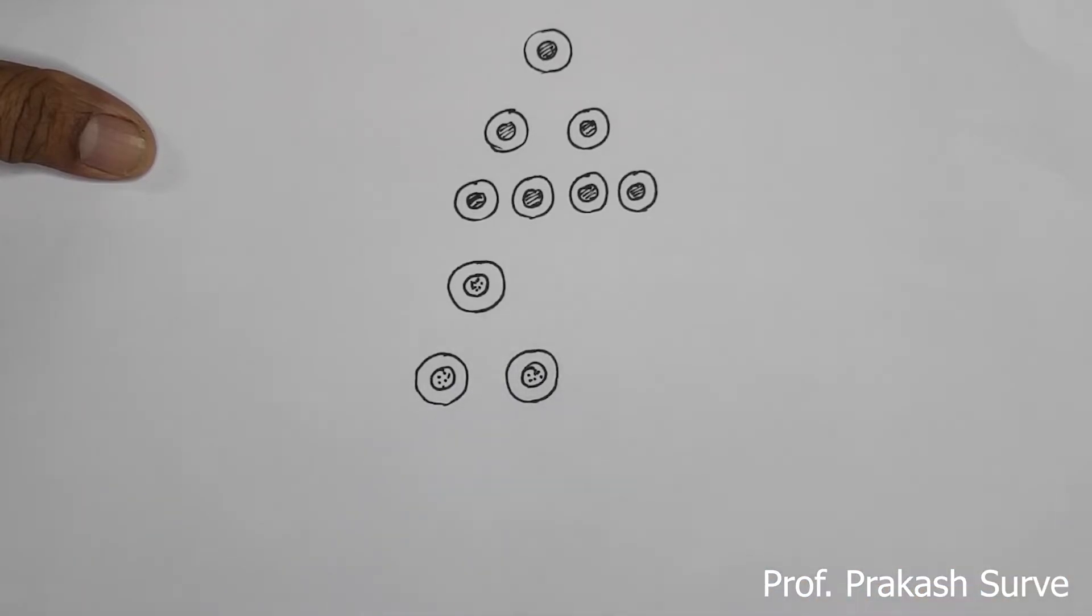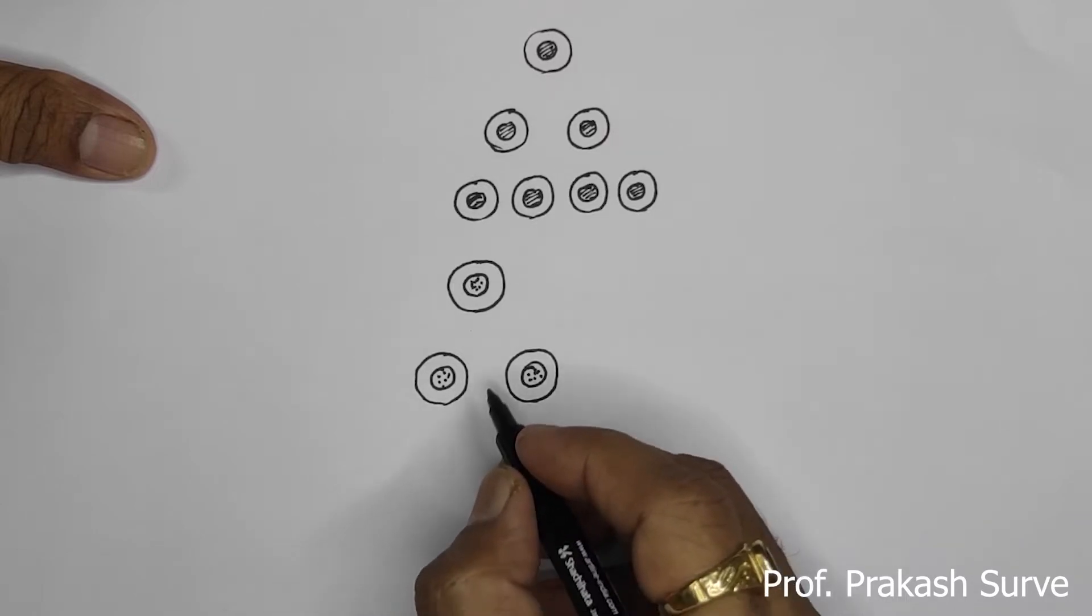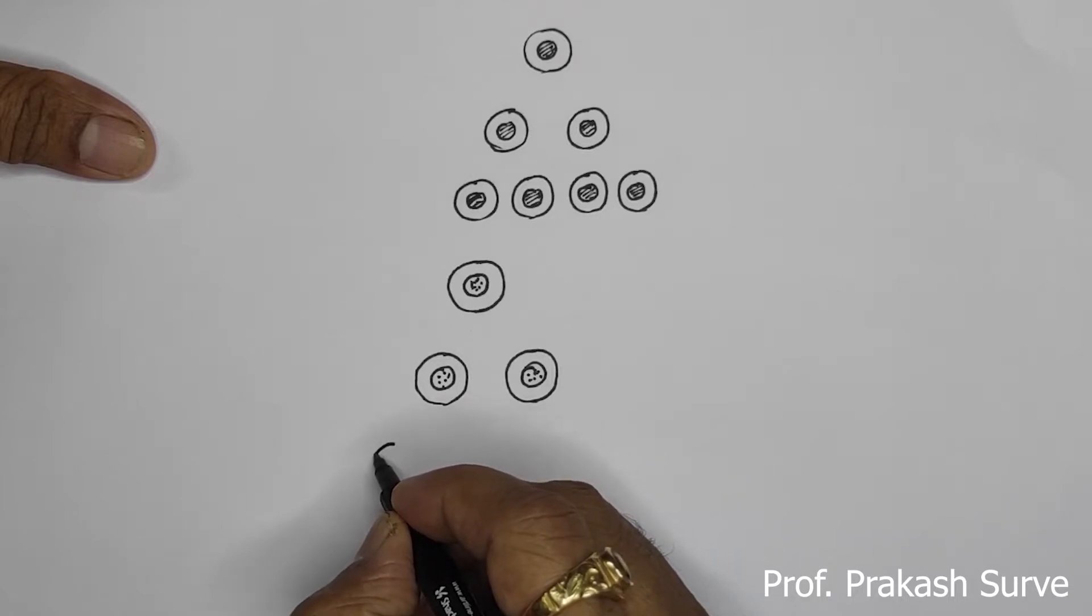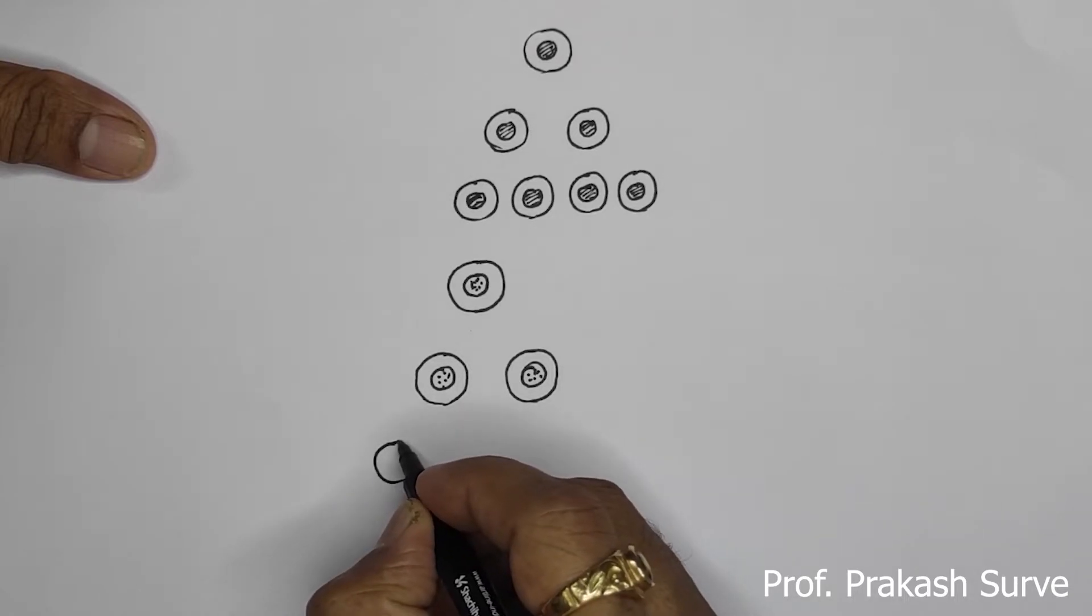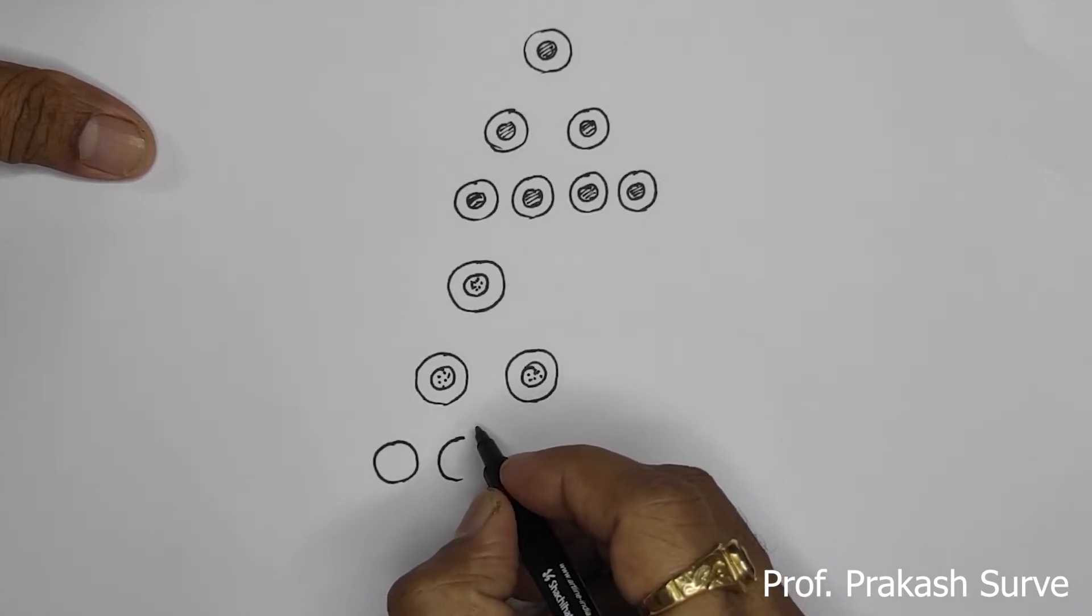So here we got two haploid cells, the secondary spermatocytes. Now it undergoes meiosis two, so from here we get four haploid spermatids.